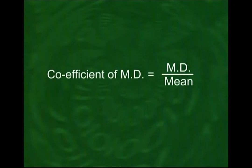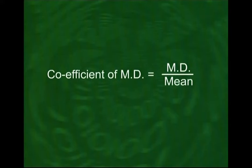The standard deviation, which we will discuss shortly, overcomes this problem in a mathematically defensible way. But before that, let me discuss the relative measure of dispersion corresponding to mean deviation. We simply divide the mean deviation by the mean to obtain the coefficient of mean deviation. Multiplying this quantity by 100 gives the answer in percentage form.